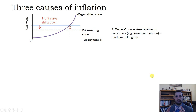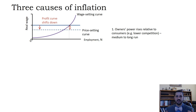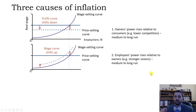or just an improved macroeconomic situation such as a lower unemployment rate. If owners have less competition in their product markets, then the profit curve shifts down — their markup increases — and we see higher prices and therefore higher inflation overall. If employees' power rises relative to owners, for instance with stronger unions, that would shift the wage curve up and lead to higher costs for firms and therefore higher prices and higher inflation.